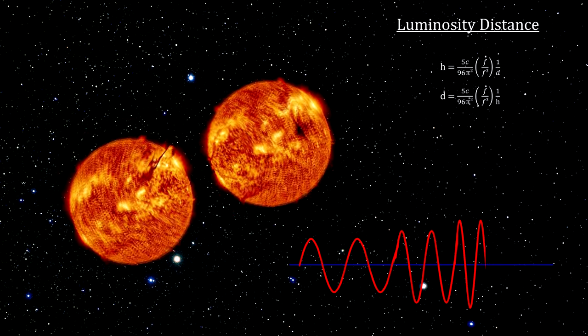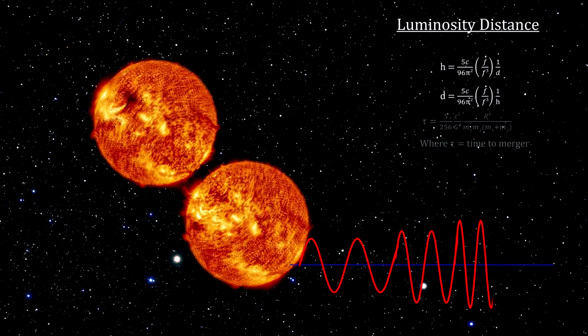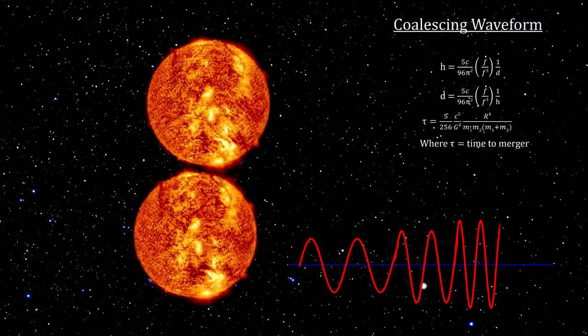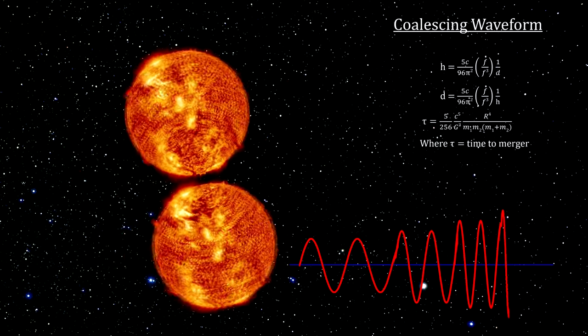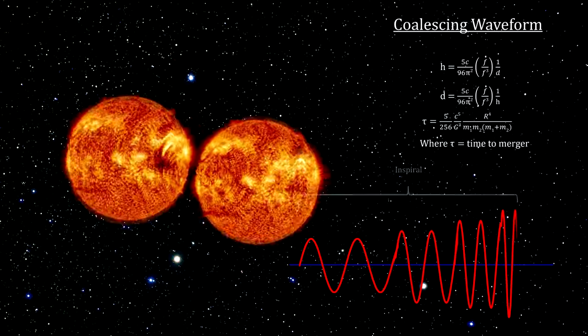With a decaying orbit, the objects will eventually collide and coalesce. We can even calculate how long that would take. The resulting waveform, called a coalescing waveform, serves as a signature for this kind of gravitational wave source. It has three phases.